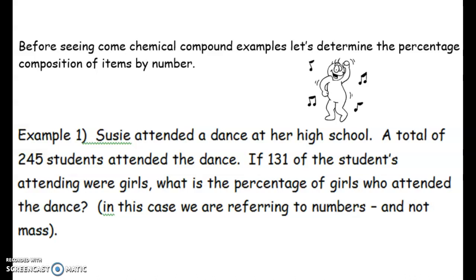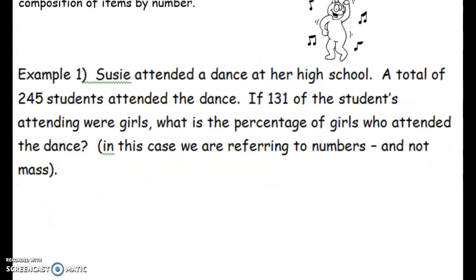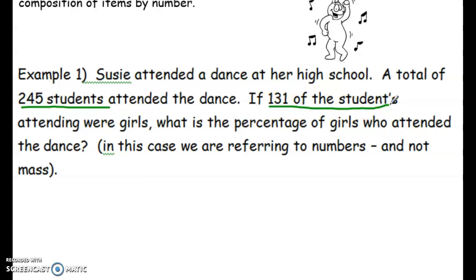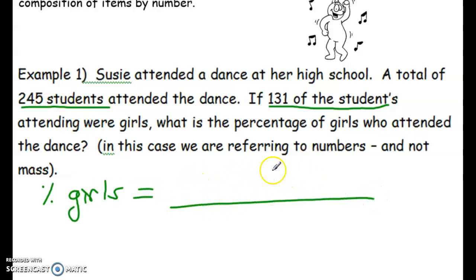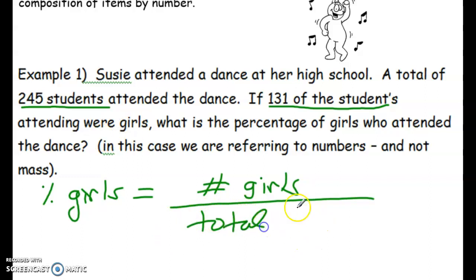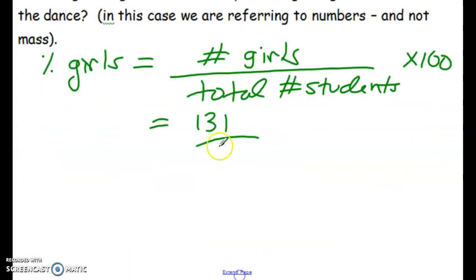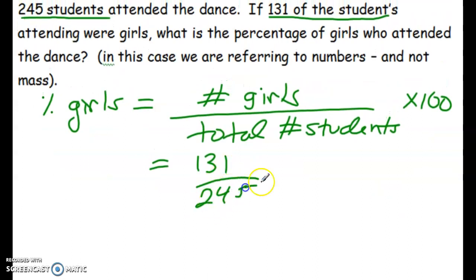Before we look into mass numbers, we'll look at a few examples with percent in terms of numbers. So we have an example: Susie's attending a dance at her high school. There's a total of 245 students at the dance. If 131 of the students identify as being girls, what is the percentage who attended the dance? The number on top is the one we want to know the percentage of; the number on the bottom is always the total number. So here we would have 131 over 245, times 100.